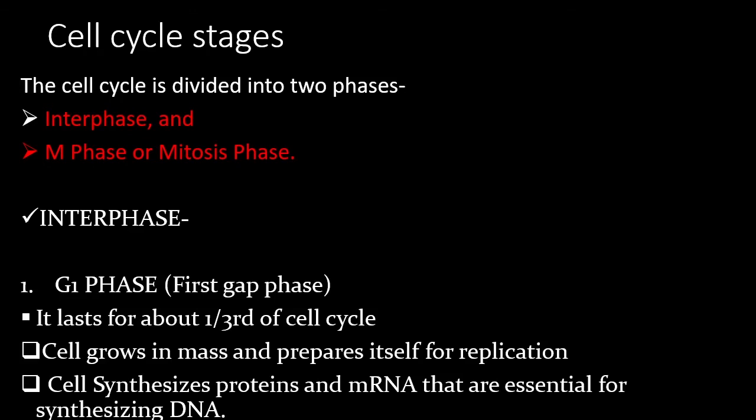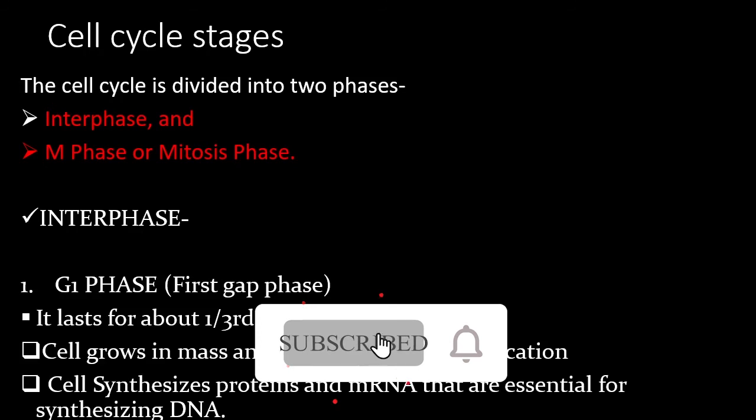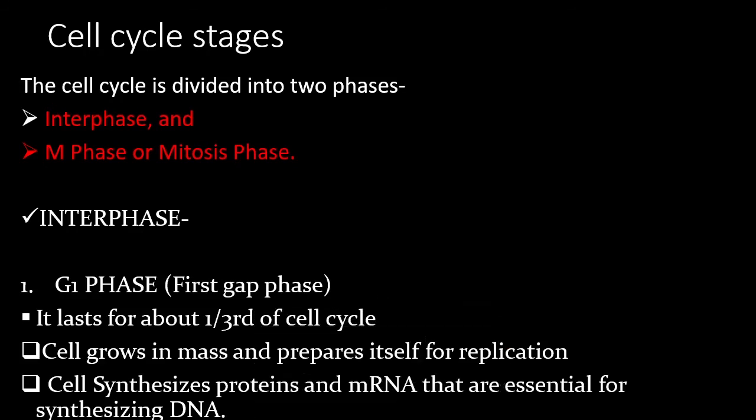Interphase has three phases: G1, S, and G2 phase. Outside of these, there is also a G0 phase. We have answered questions: what is the cell cycle, why it is needed — for growth, vegetative propagation, and tissue repair — and what the definition of the cell cycle is.